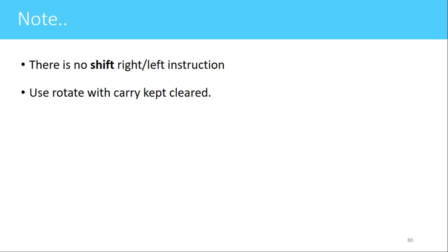In a shift operation, when shifting left the LSB should be 0, and when shifting right the MSB should be 0. Since shift instructions are not available, we use rotate instructions for shifting — by first clearing the carry flag to 0 and then performing the rotate. This process must be repeated for every shift operation.